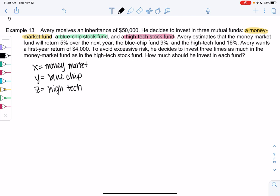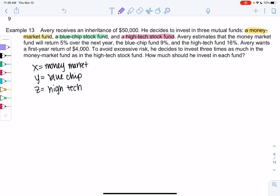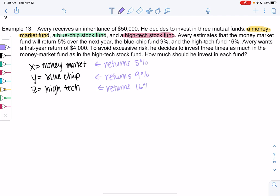Avery estimates that the money market fund returns 5%, so that'll be useful in a little bit. The blue chip returns 9%, so this is how much money you would earn over a year. The high-tech returns 16%. Avery wants a first-year return of $4,000. So we have $50,000 to invest, and then we want to get $4,000 back.